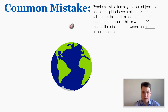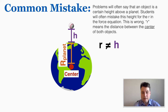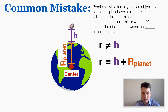Another common mistake: problems often state that an object is a certain height above a planet, and students mistake that height for r. But r means the distance between the centers of both objects. So the total r is that height plus the radius of the planet — that's the true distance from the object to the center of the planet.